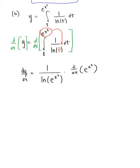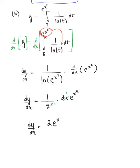Now notice here we have some fun simplification. We have the natural logarithm of the natural exponential, which are inverses of each other, so they undo the effects of each other, leaving us with dy/dx equal to 1 over x squared, multiplied by the derivative of the natural exponential. That's 2x times e raised to the x squared. We can simplify even further — the x in the numerator cancels with one of the x's in the denominator, leaving us with a final answer of 2 times e raised to the x squared, all over x.